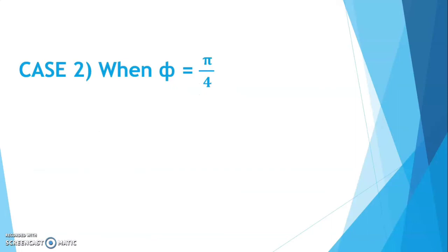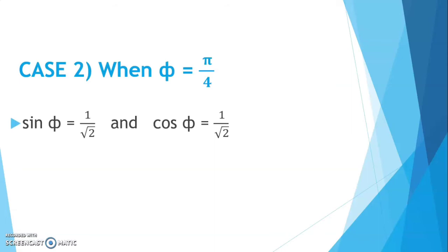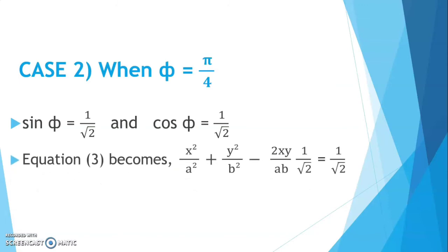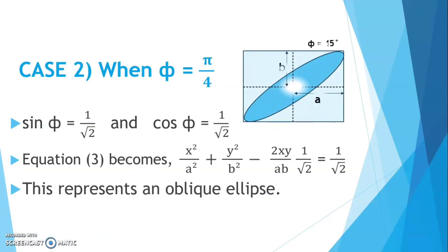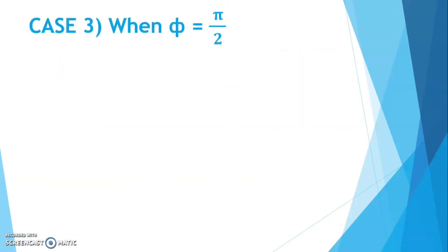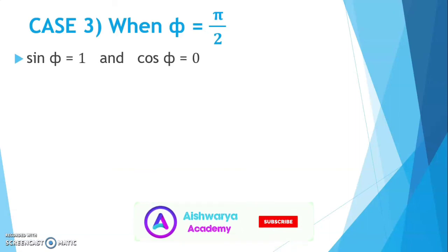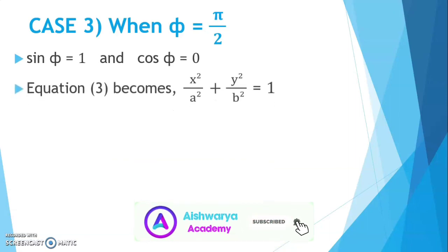Case 2: when φ equals to π/4, we have sin(φ) = 1/√2 and cos(φ) = 1/√2. Substituting these values in equation 3, we get x²/A² + y²/B² − 2xy/(AB)·(1/√2) = 1/2. This represents an oblique ellipse. Case 3: when φ equals to π/2, we have sin(φ) = 1 and cos(φ) = 0. Substituting these values, equation 3 becomes x²/A² + y²/B² = 1. This resultant path is an ellipse whose major axis coincides with the coordinate axes.